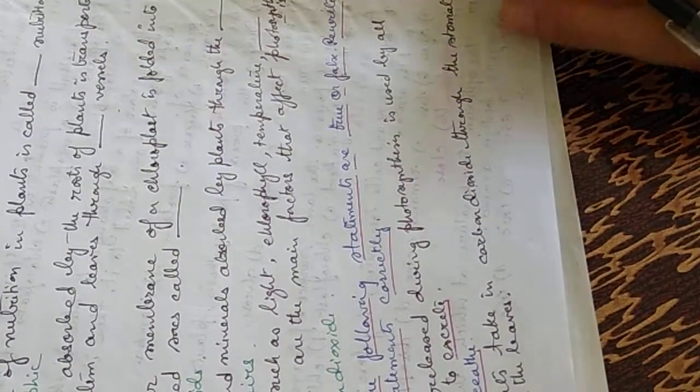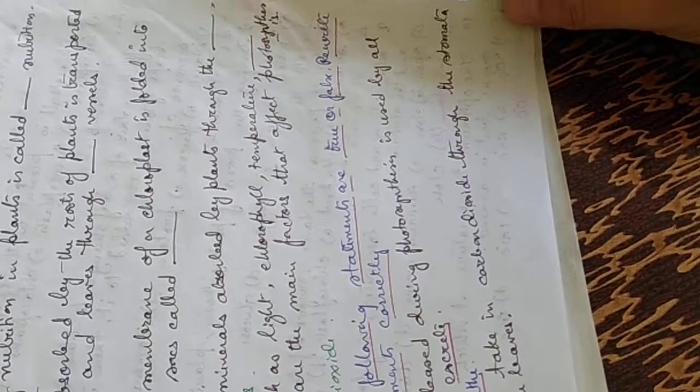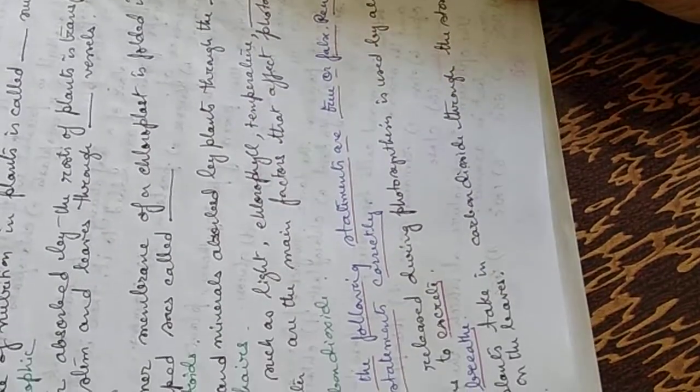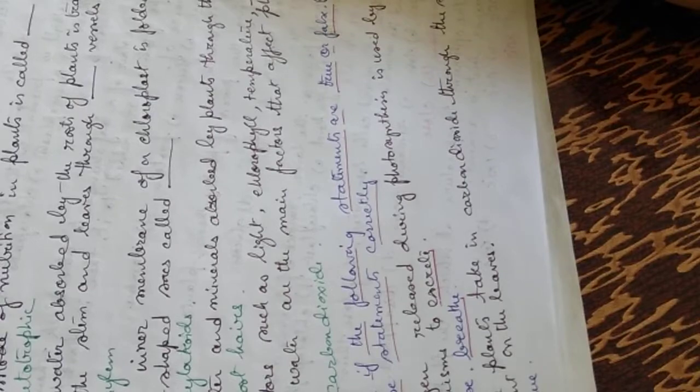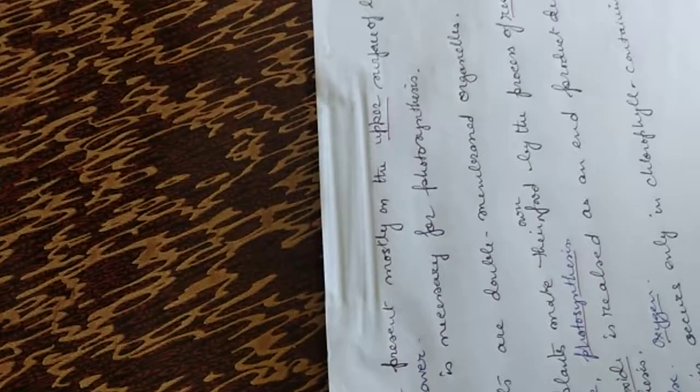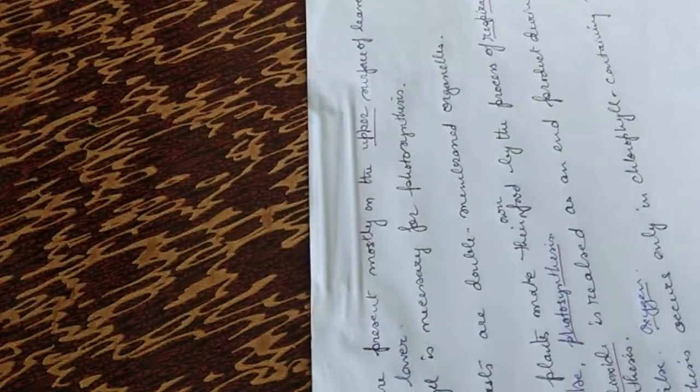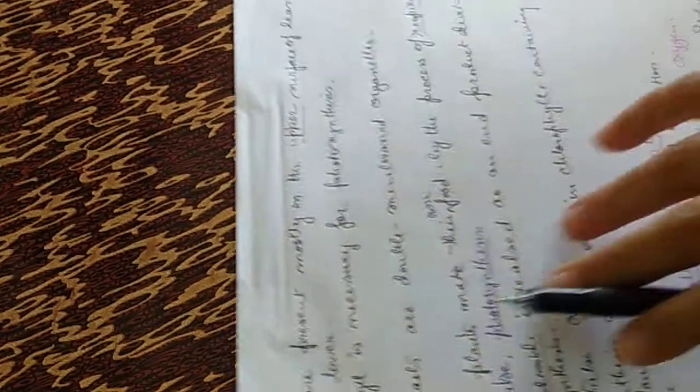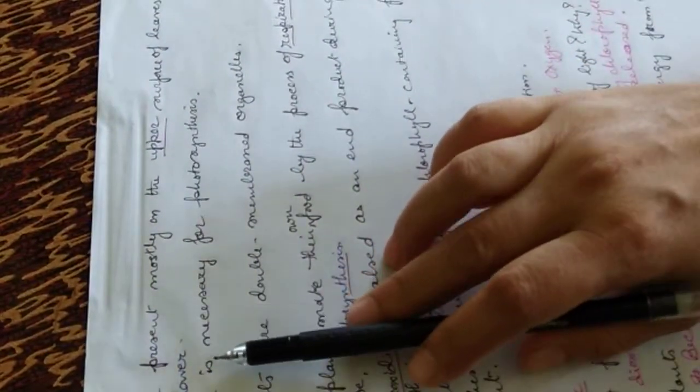The plants take in carbon dioxide through the stomata present in the leaves. That's true. Now, the stomata are present mostly in the upper surface of the leaves. That is false. They are mostly found in the lower surface of the leaves.